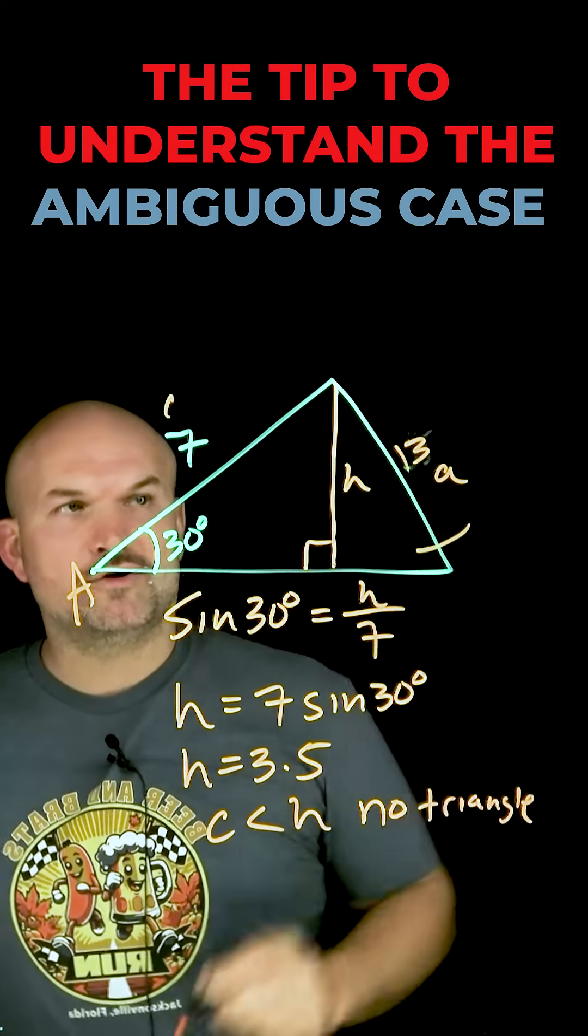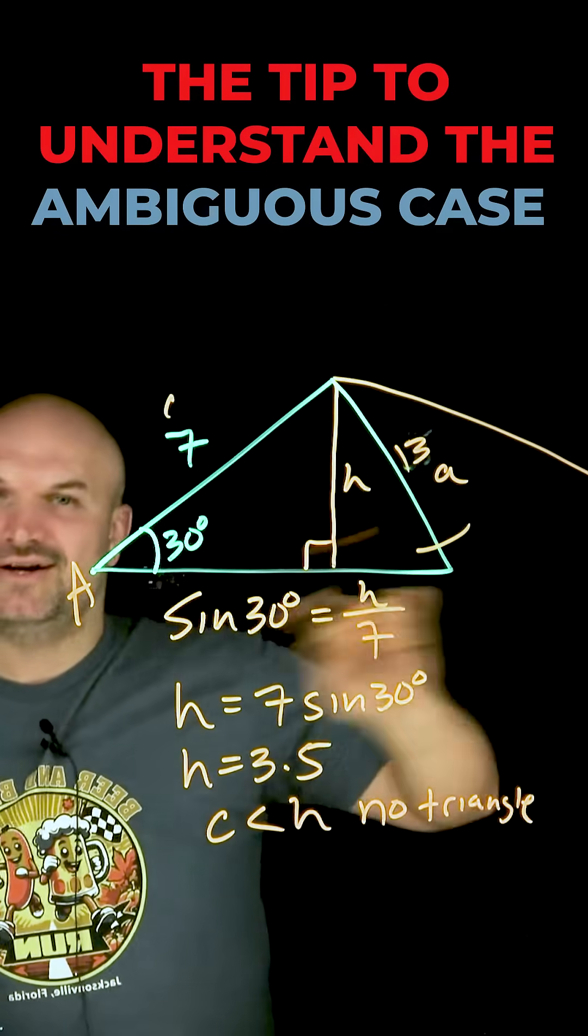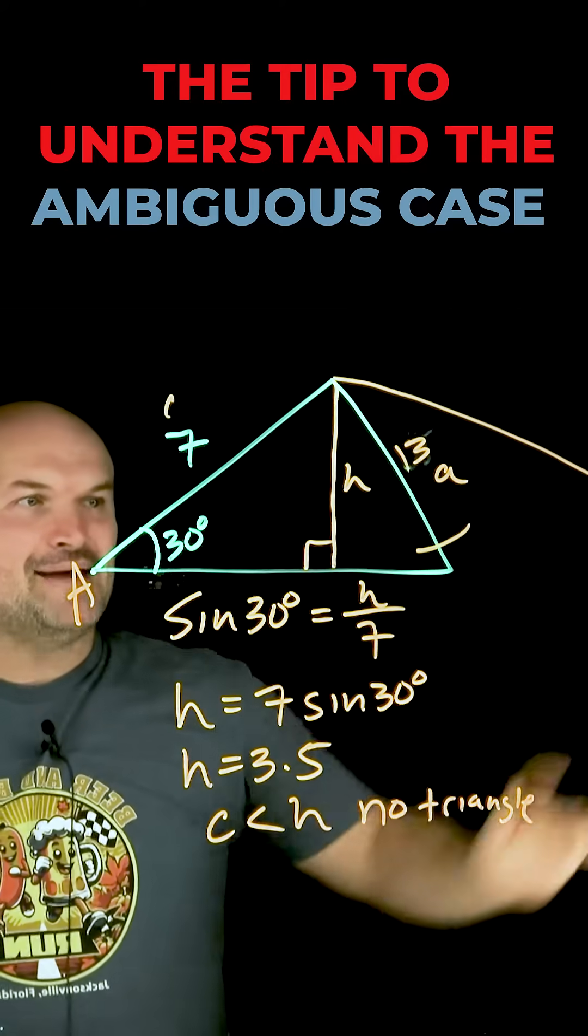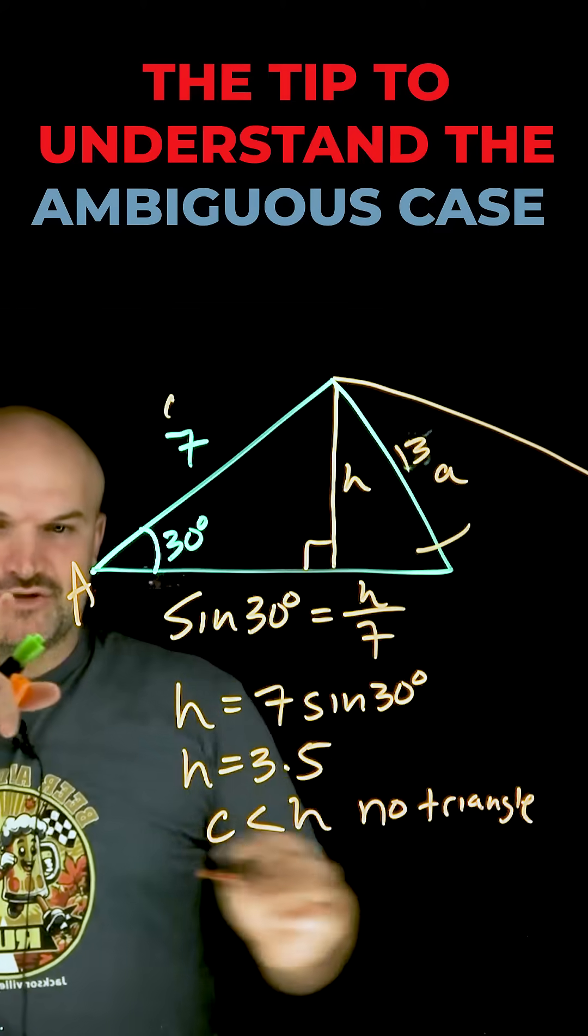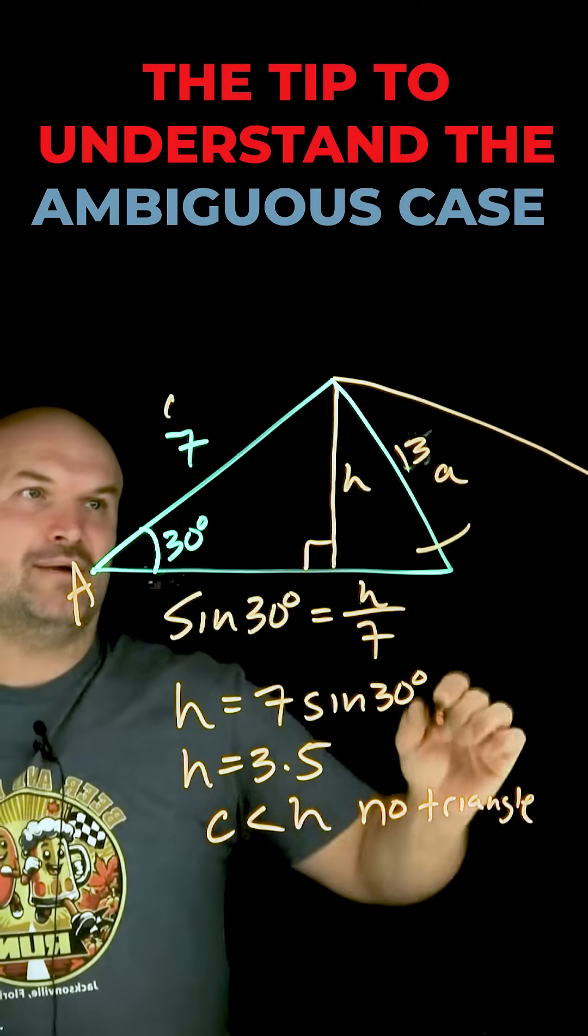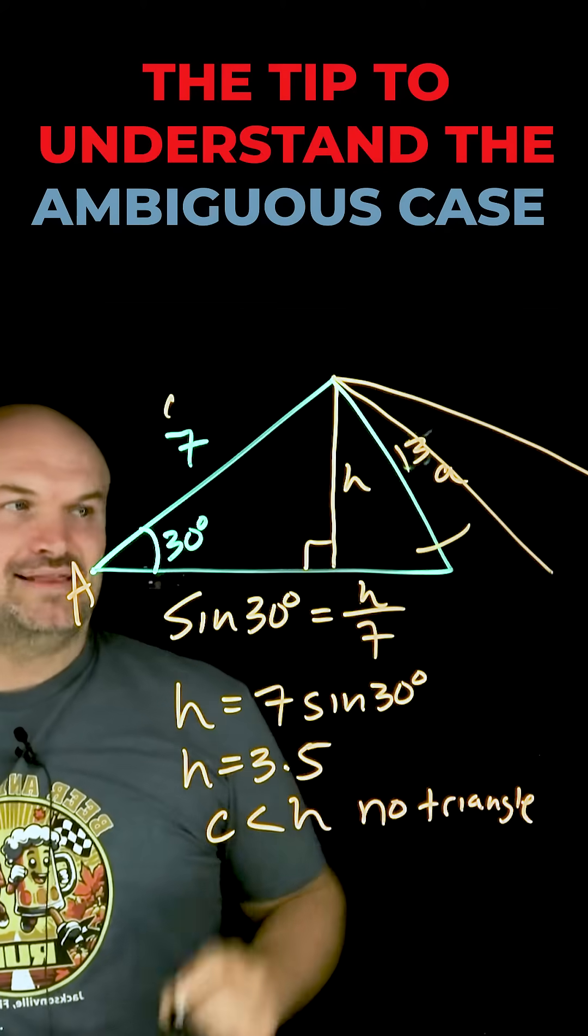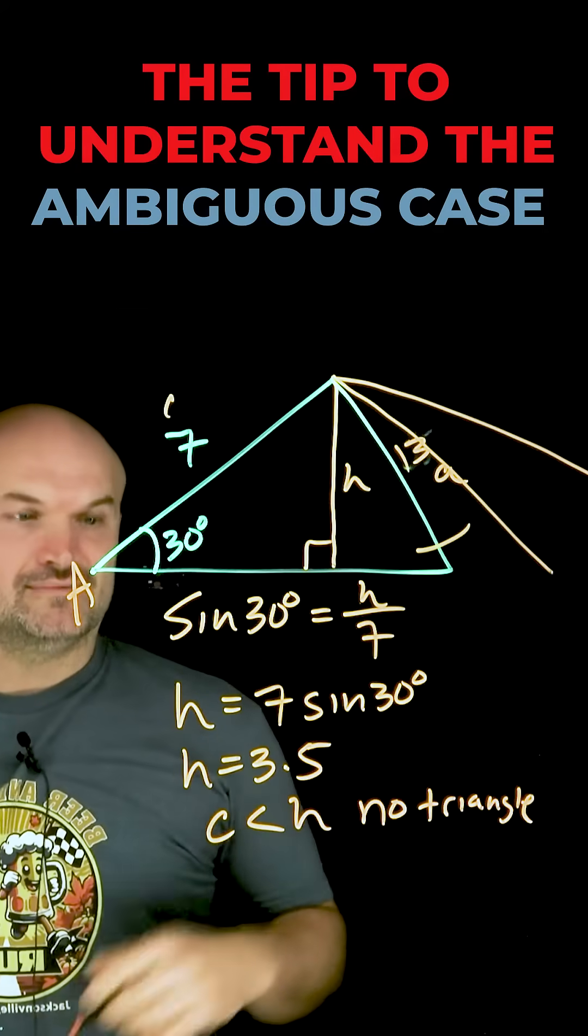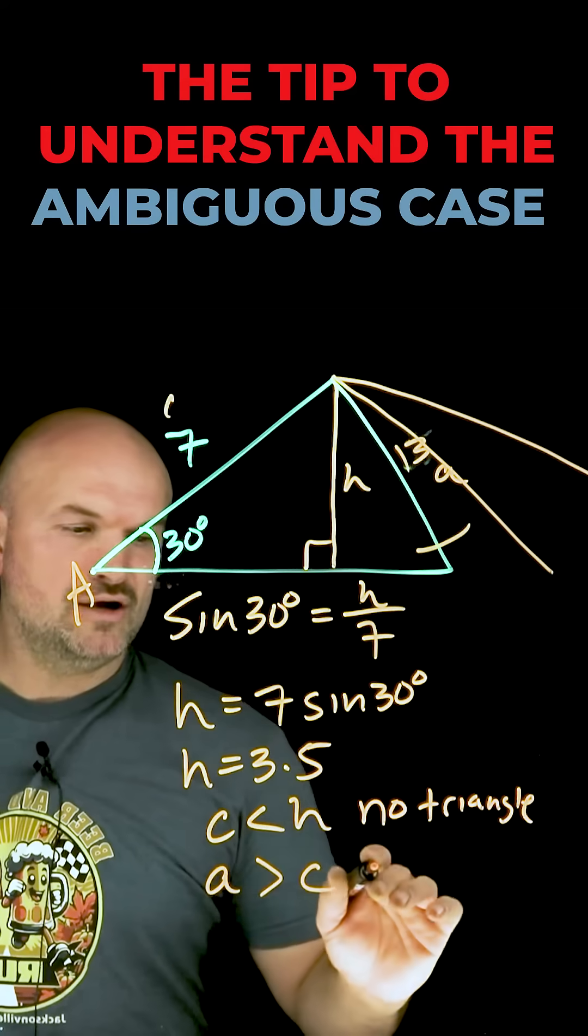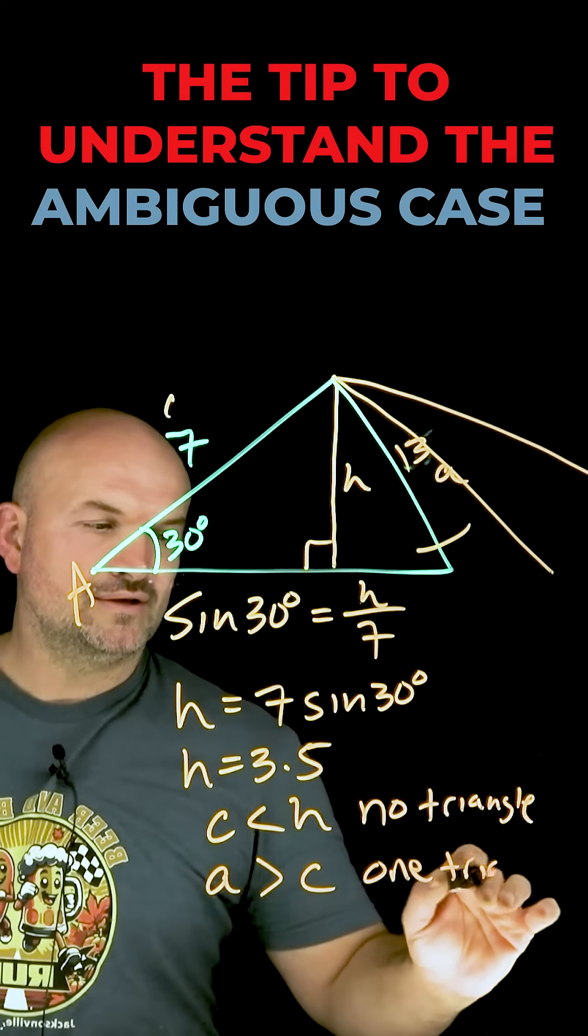Now, what about if this was 13? Well, this would be so big, it'd be like way over here outside of the frame of the video. But what I want you to understand is, if I swing this around any way that I want to, or let's even put it like right in there, it's only going to make one triangle. So when my A is larger than my C, we're going to have one triangle.